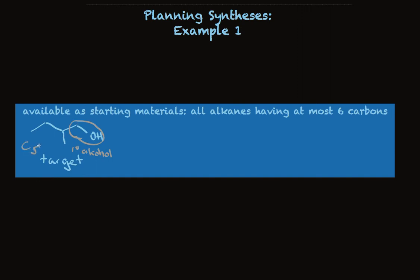And then step three is to notice the pool of available starting materials. What compounds can we start from? We can start with alkanes. They can have at most six carbons. This is convenient. We don't need to make any carbon-carbon bonds because we could start with an alkane that has five carbons. We could start with an alkane that has six carbons if we really wanted to.